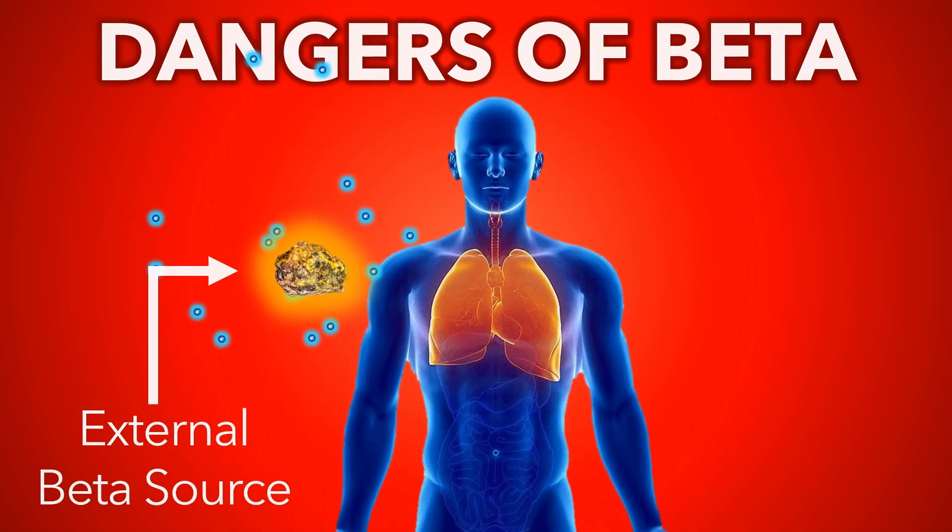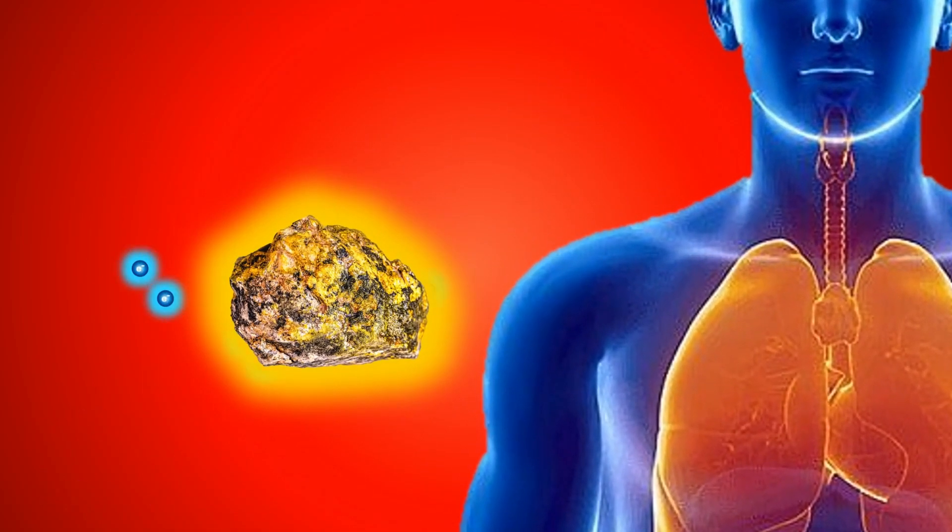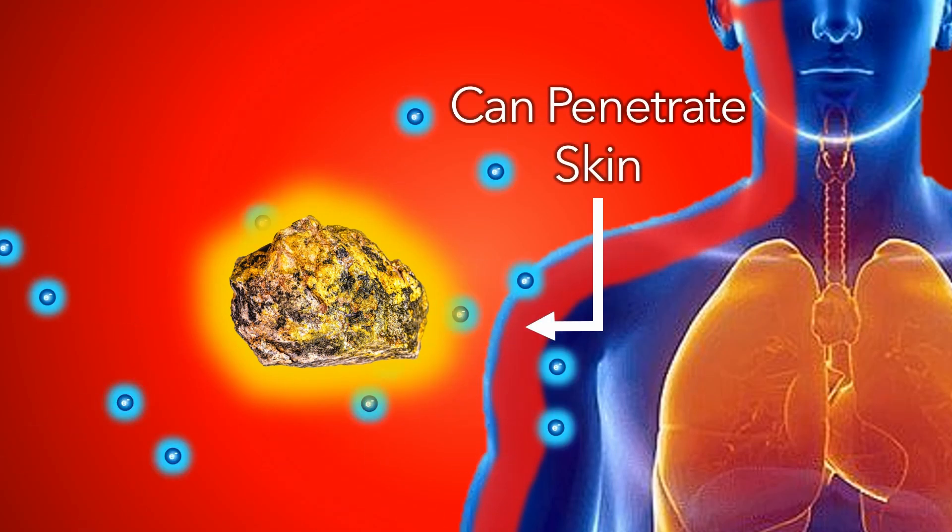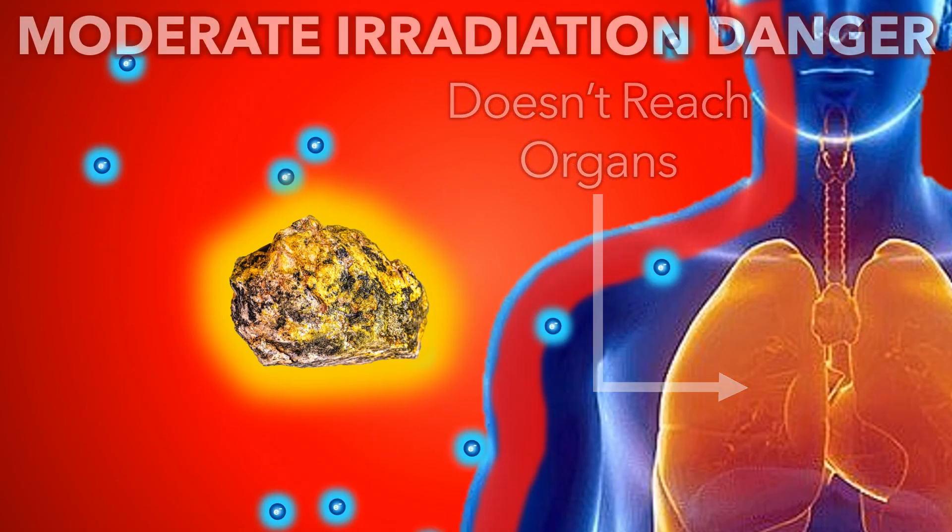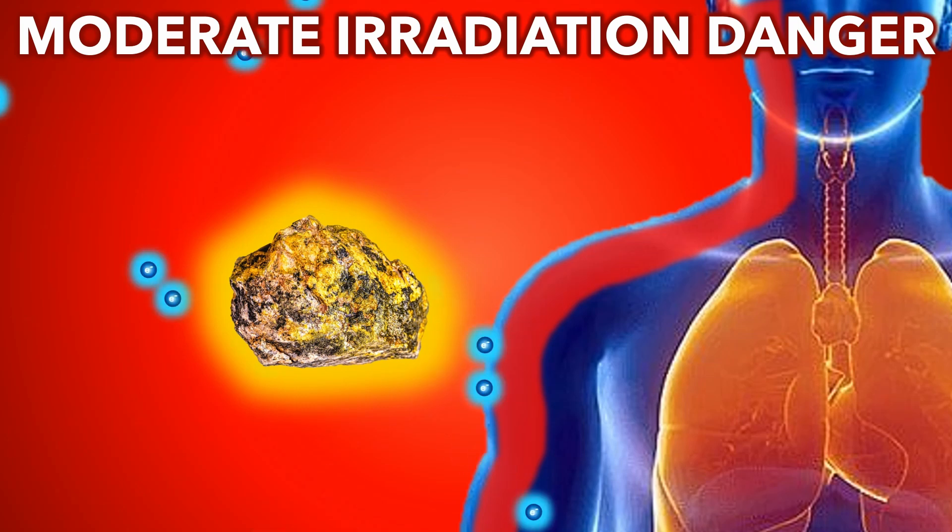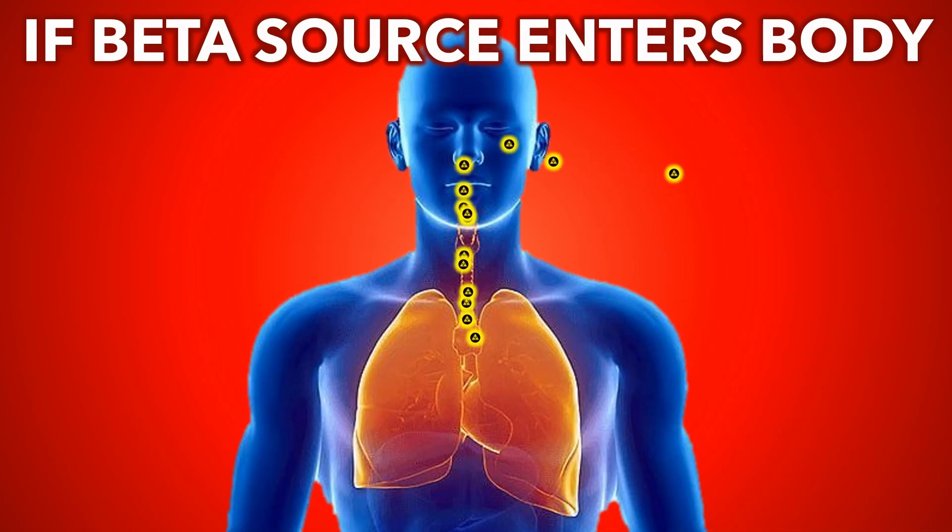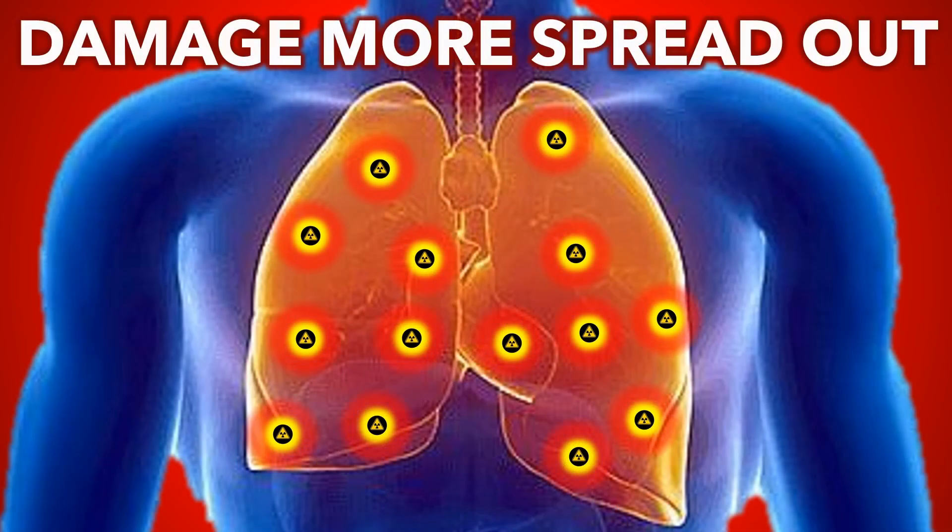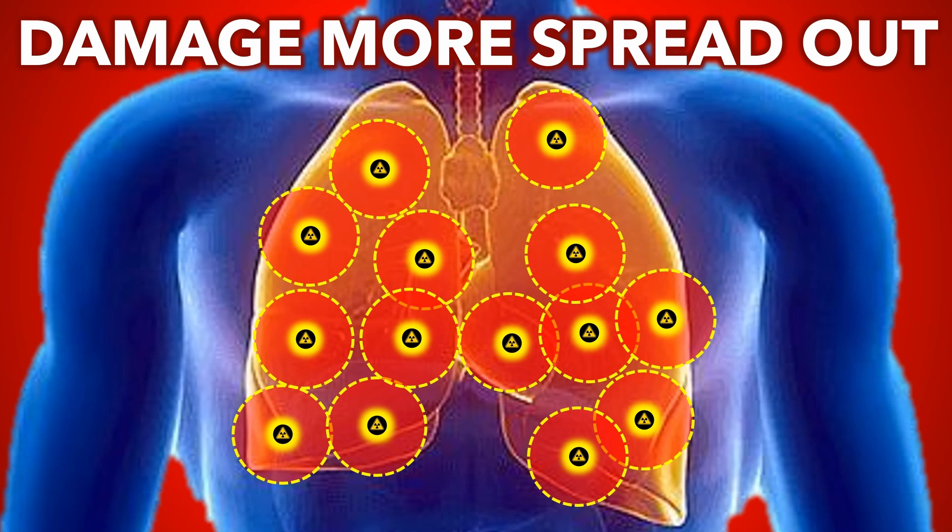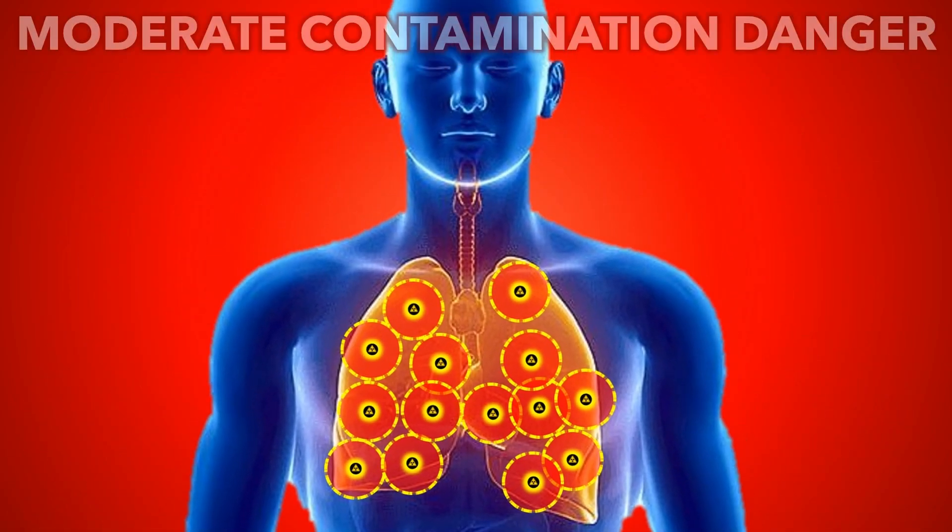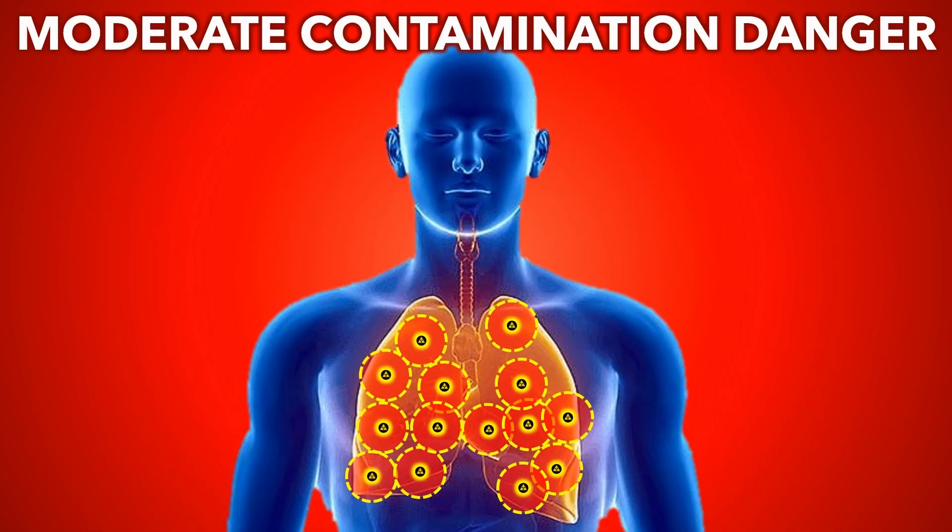Beta danger. Unlike alpha, beta radiation can penetrate skin, although generally it doesn't reach internal organs, posing a moderate irradiation danger. If the beta source enters the body, the higher penetration causes more spread out internal damage, posing a lower, but still moderate contamination danger.